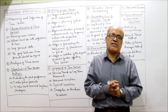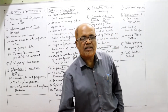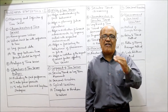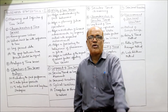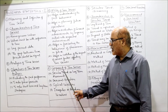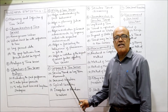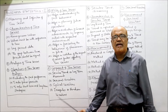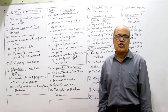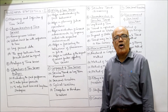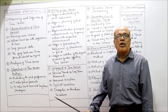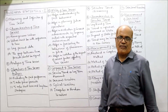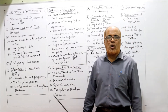Continuing the lecture, we have already discussed that there are four components of time series — four factors that affect the changes in the values of the variable. These are: first, secular trend or long-term movement; second, seasonal variation; third, cyclical variation; and fourth, irregular or random variables. Problems are also based on these components.